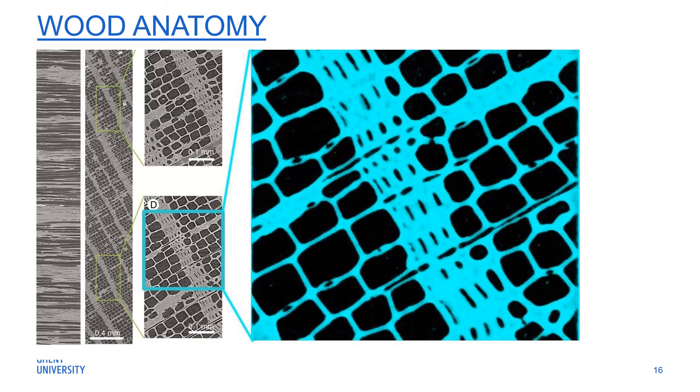If we scan splinter-sized samples, we can visualize the cell lumina for large tree species. Then with a machine learning algorithm, we can easily map cell wall thickness and cell lumina thickness.